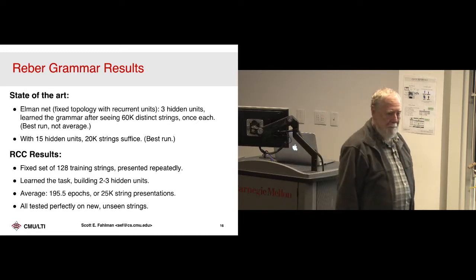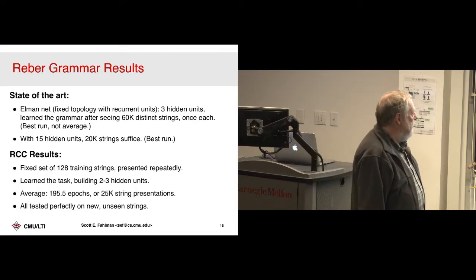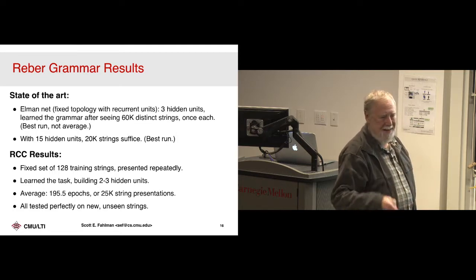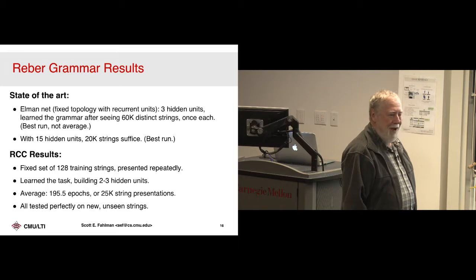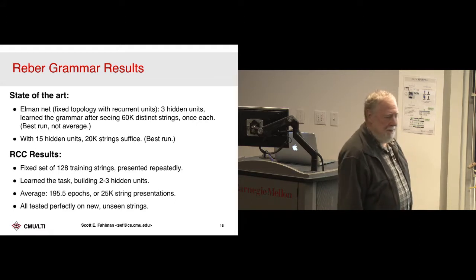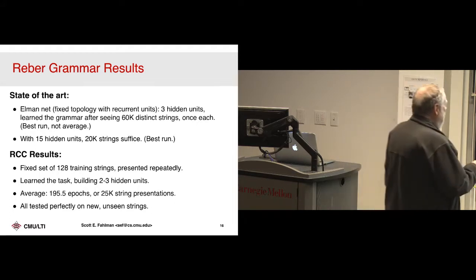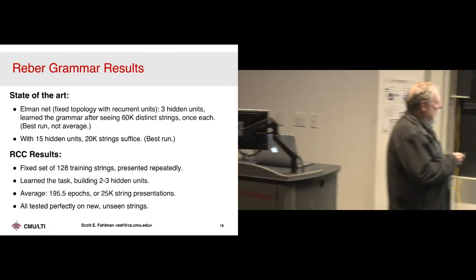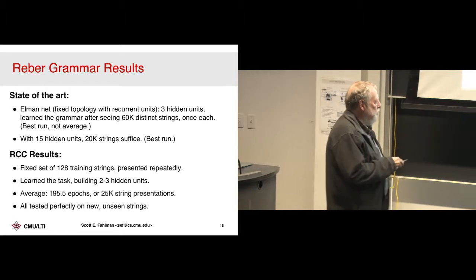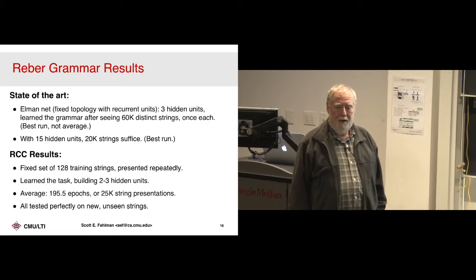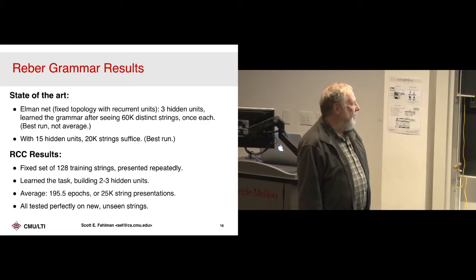We only used 128 distinct strings — that was enough to show the network what the topology was. And all the runs we tried this on tested perfectly on new, unseen strings. So it had learned that grammar. That's pretty cool — it surprised the hell out of me. I didn't think it was going to be this good. Just in time for the NIPS deadline too.